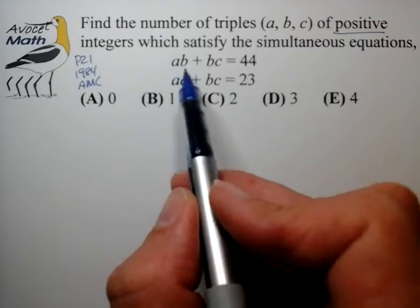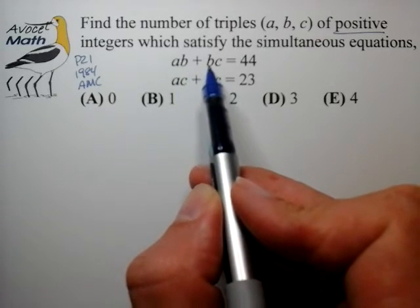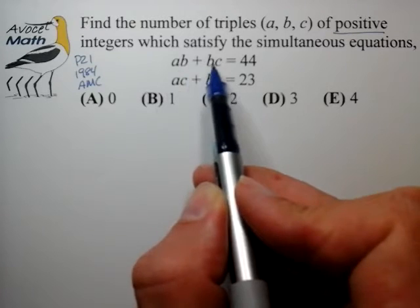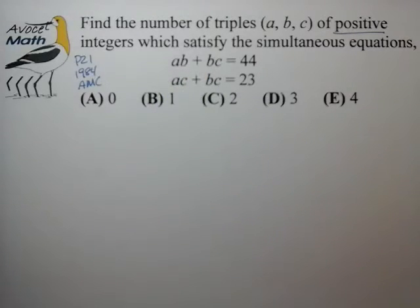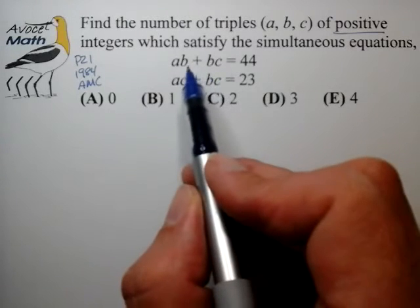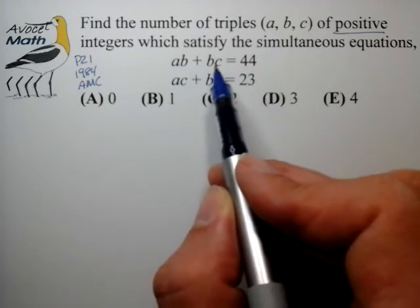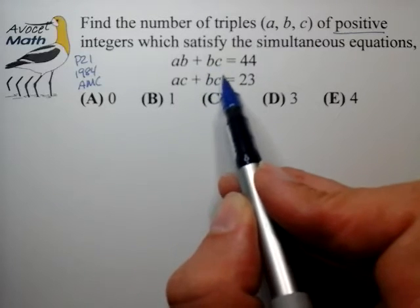We do have some opportunities to create some factor groups. The b could be pulled out in this expression. The c could be pulled out as a factor in the bottom equation. That all looks pretty helpful. I also notice an opportunity to subtract the equations to create a slightly different equation where the bc's are cancelled.